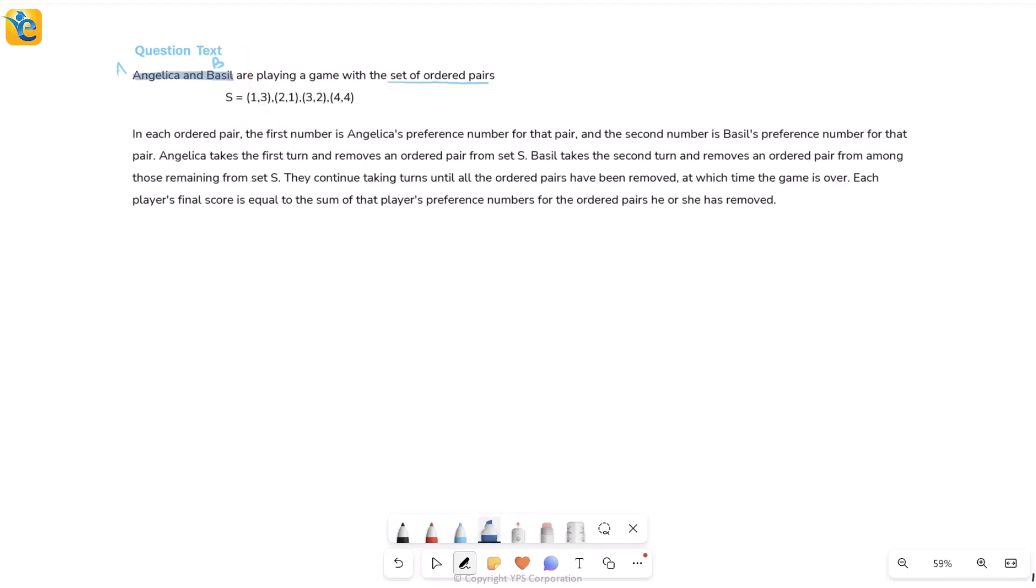In each of these four ordered pairs, the first number is Angelica's preference number for that pair. That means if I look at 1,3, then the first number, which is 1, this is Angelica's preference number for this particular pair. Similarly, if I want to find Angelica's preference number in this third pair, then again it's going to be the first number, which is 3, and so on.